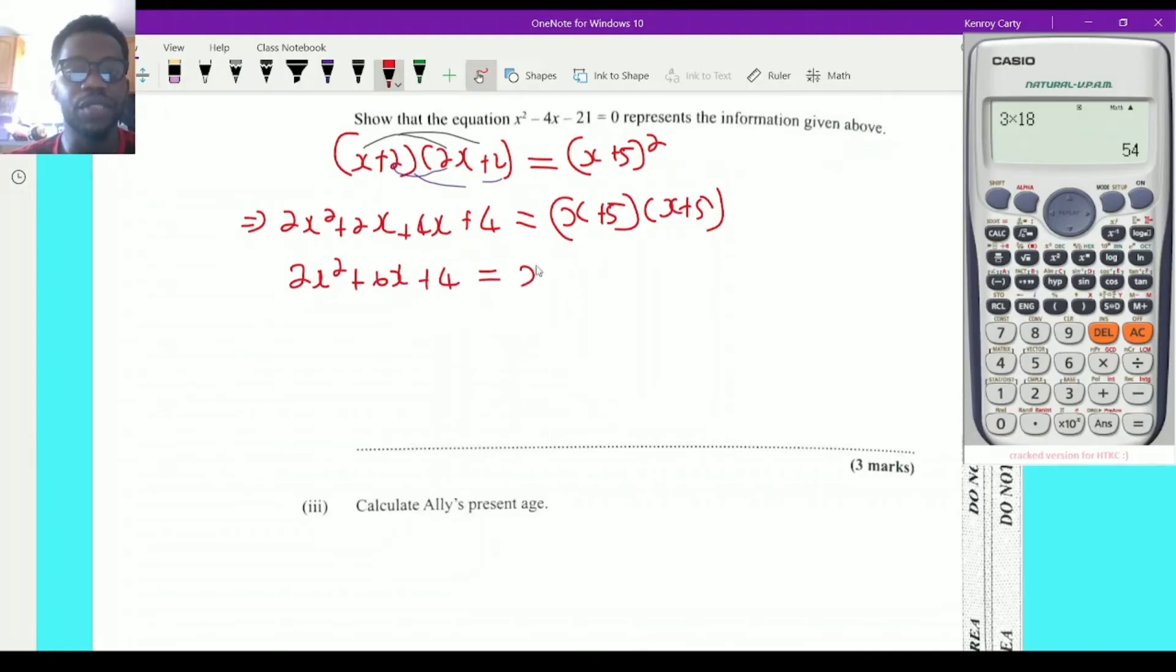Now x plus 5 all squared. There's a lot of shortcuts that we could use, but let me just write this out to make it easier for everyone. x plus 5 times x plus 5. x times x, you know the same procedure, x squared. Then x times 5 is going to give me 5x. Then you move on to 5 and we're doing the same concept. 5 times x is 5x and 5 times 5 is 25. So we have 2x squared plus 6x plus 4 equal x squared like terms here in the middle. 5x plus 5x that's 10x plus 25.